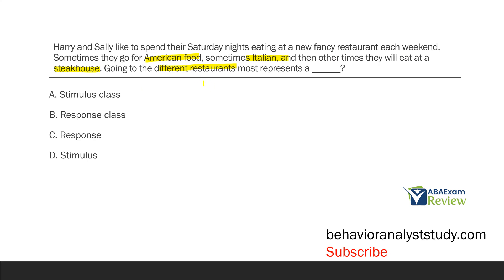When you have a set of responses meeting the same need or serving the same function, what do we call that? Answer A is a stimulus class. Going to the different restaurants is not the stimuli — going to the restaurants are our responses. A stimulus class might be the American restaurant, the Italian restaurant, and the steakhouse — they have things in common and evoke the same responses. But we're not looking at the restaurants; we're looking at going to the restaurants, which is our response. Going to the different restaurants represents a response class.